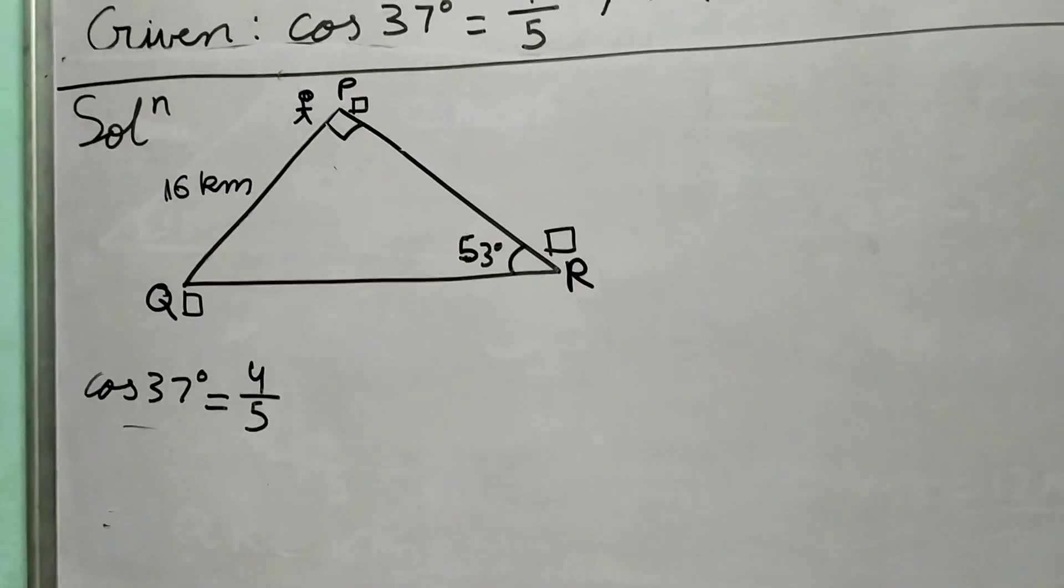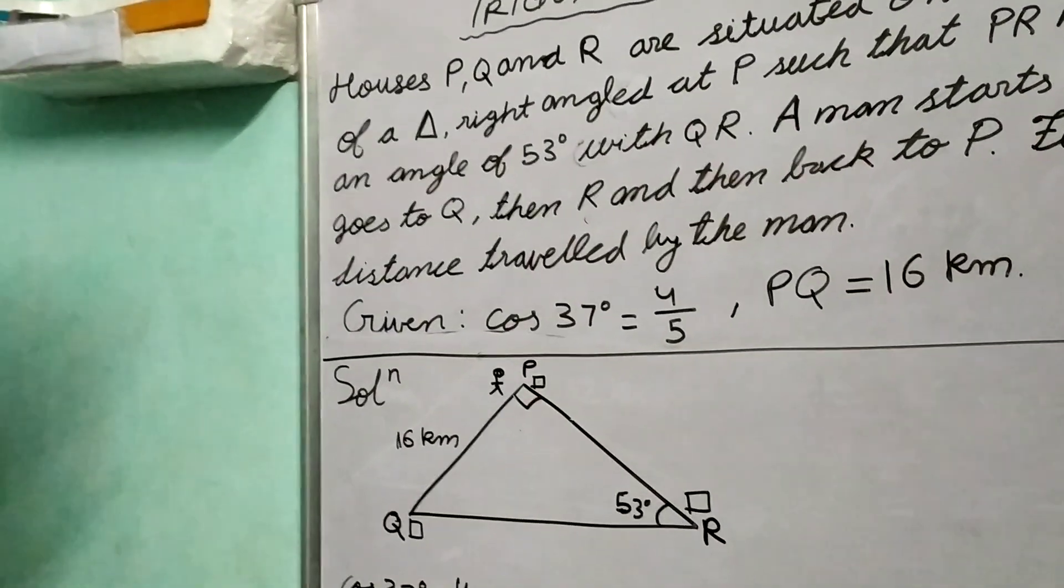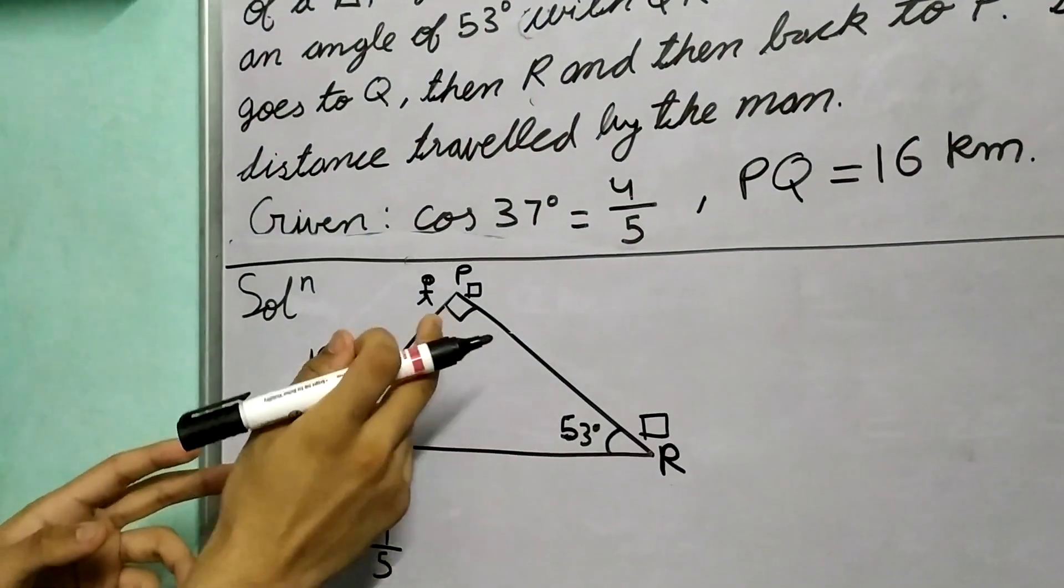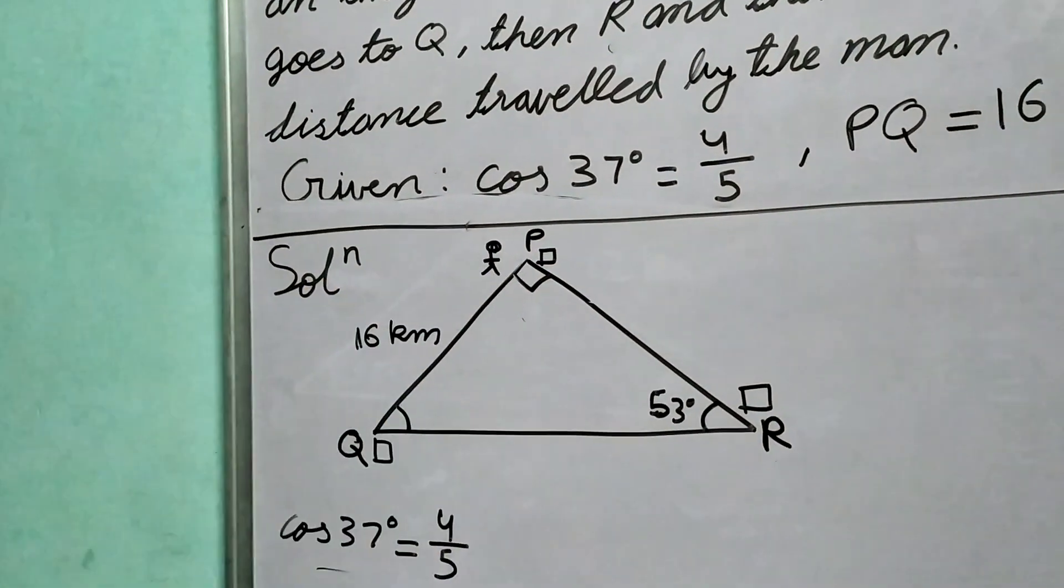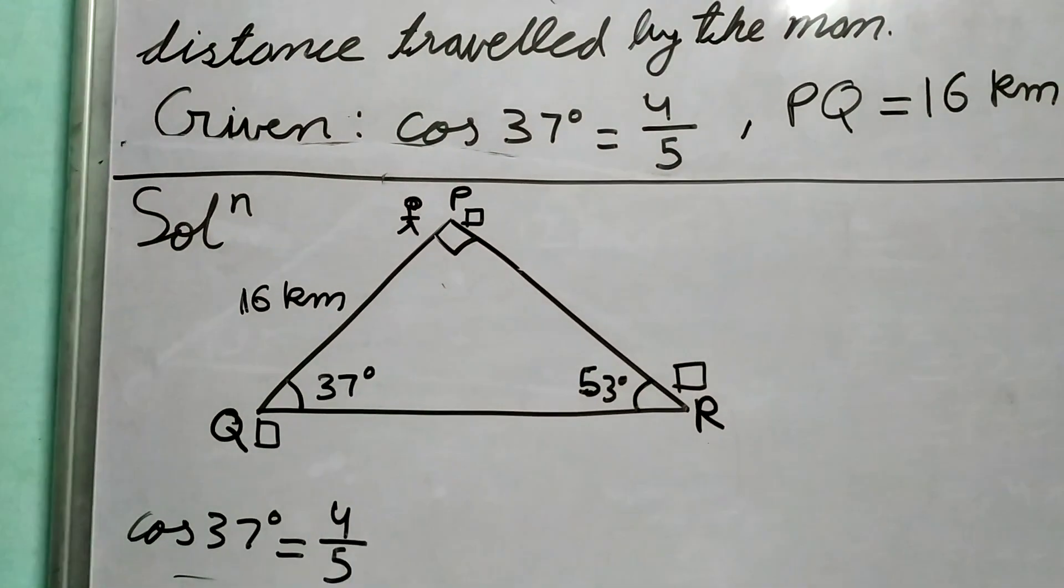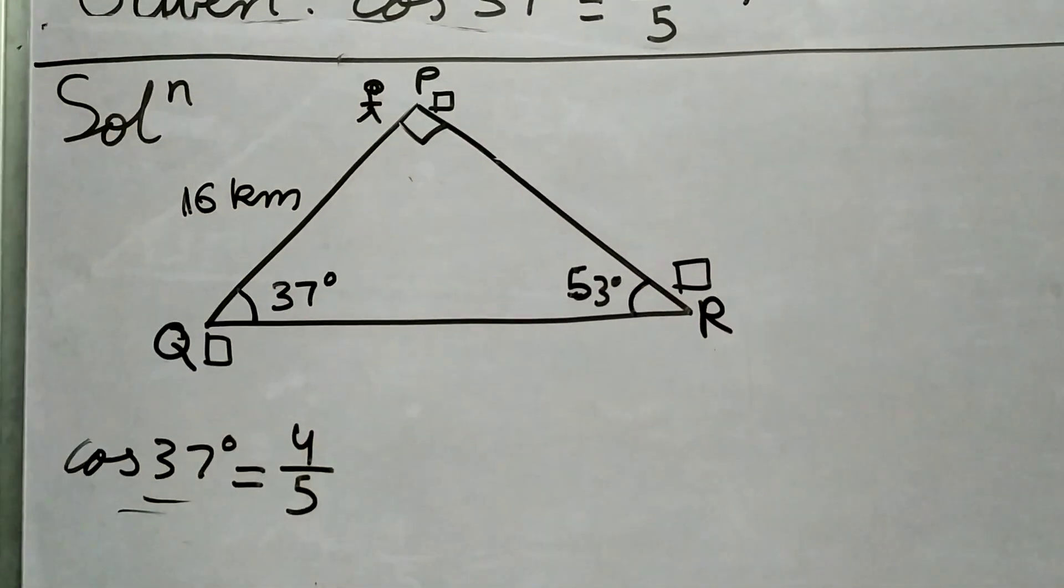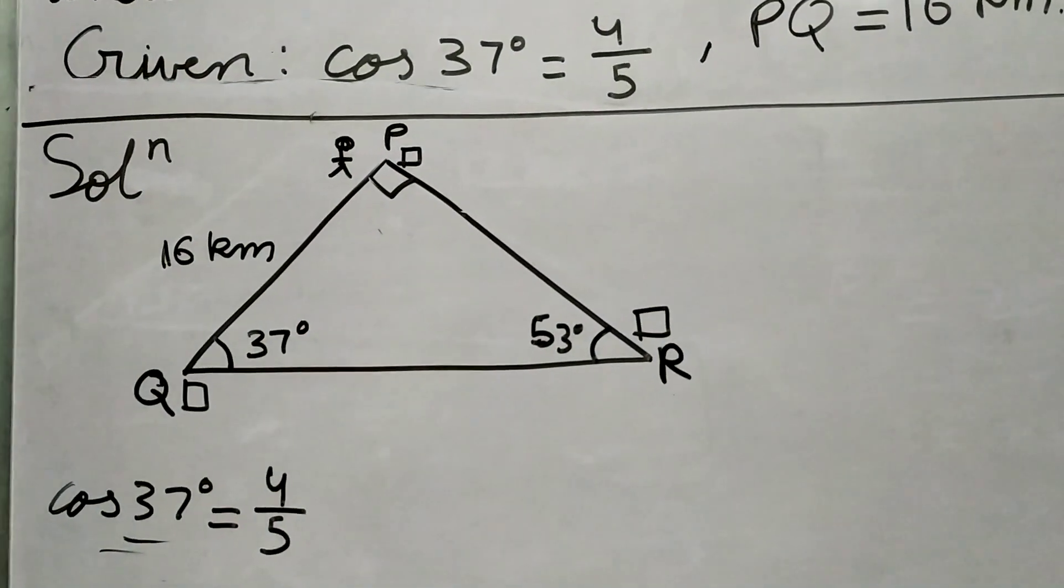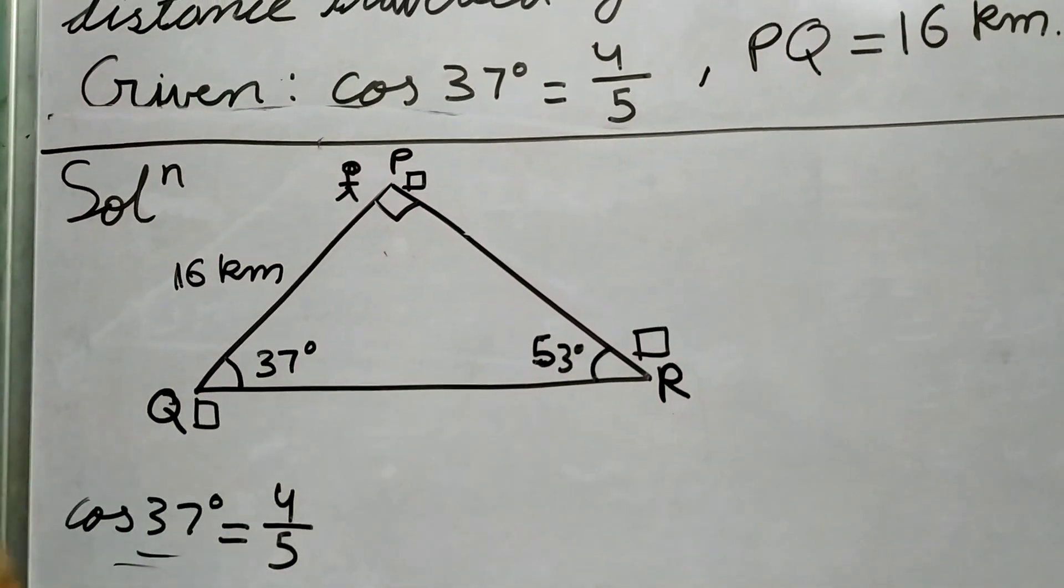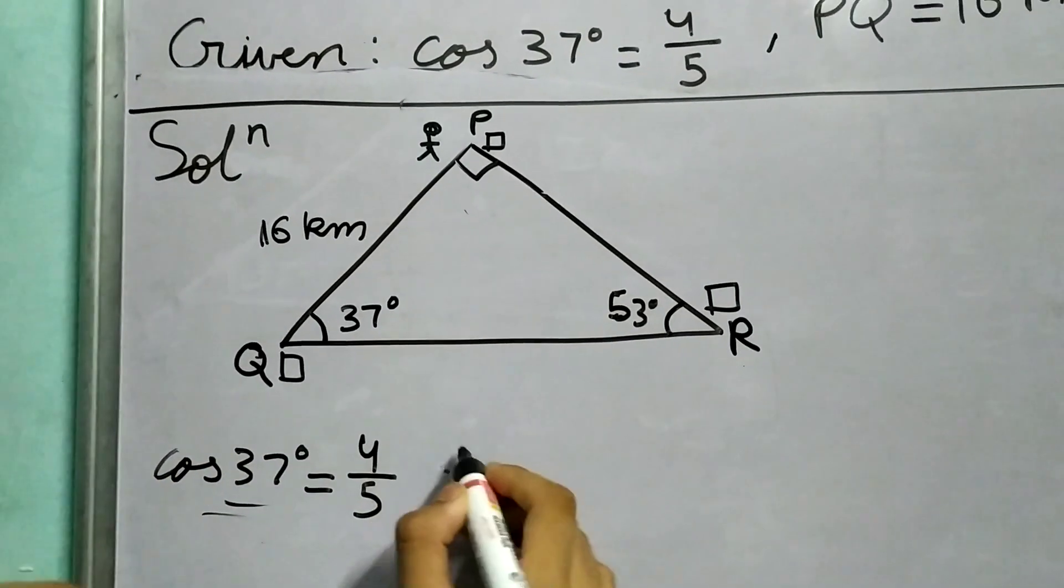Now cos 37° might not strike at first glance, but if you calculate this angle—I encourage you to do this on your own—90° plus 53° plus this angle must equal 180°, therefore this angle will be 37°. That's why it was given cos 37° is 4/5.